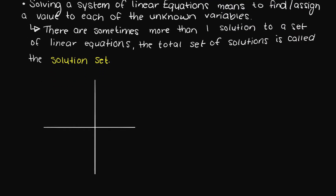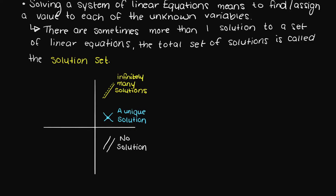There are three possible solutions when solving a system of linear equations. Firstly, we could have infinitely many solutions, which occurs when our linear equations are on top of one another. Secondly, the system could have a single unique solution — this is when our system of equations all cross at a single point. Lastly, the system could have no solution, meaning there is no possible point where all of our linear equations pass through.